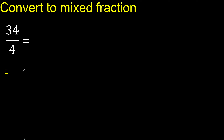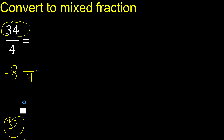First, the same number here: 4 × which number is nearest to 34 but not greater? 4 × 9 is greater; 8 × 4 = 32 is not greater. 34 minus 32 is 2 here.